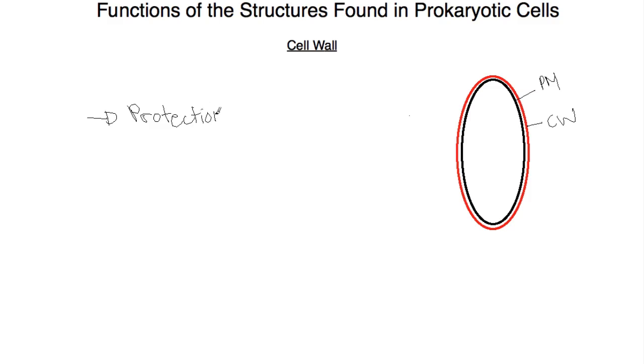The cell wall protects the cell from its external environment. So outside the cell, there are many things that could cause damage to it, and so the cell wall protects it.